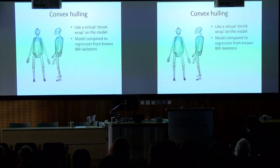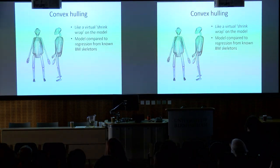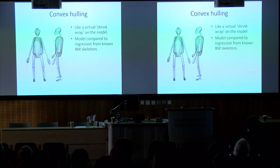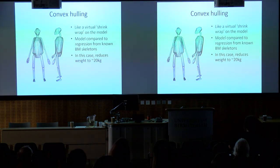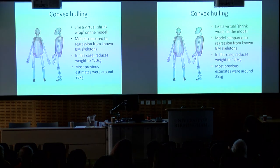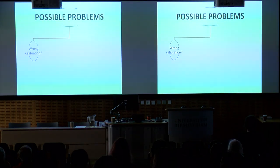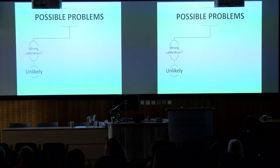Convex hull body mass estimation works like a virtual shrink-wrap on your model. We compare it to a regression from known body-mass skeletons or cadavers that we've scanned and run a convex hull on. In our case it reduced the weight to around 20 kilos — there's a typo in the abstract saying 20.1, but our preferred estimate is 20.4 kilos. Most previous estimates were much closer to 25 kilograms. Is it the wrong calibration dataset? We only had 15 primates, but we covered a wide range of sizes and genera.